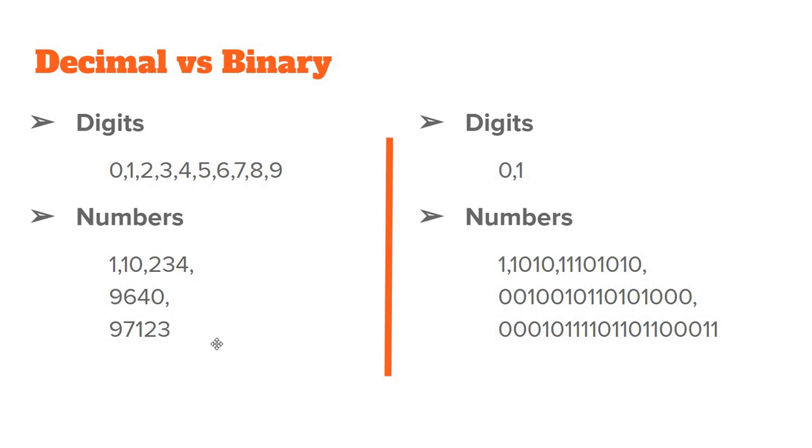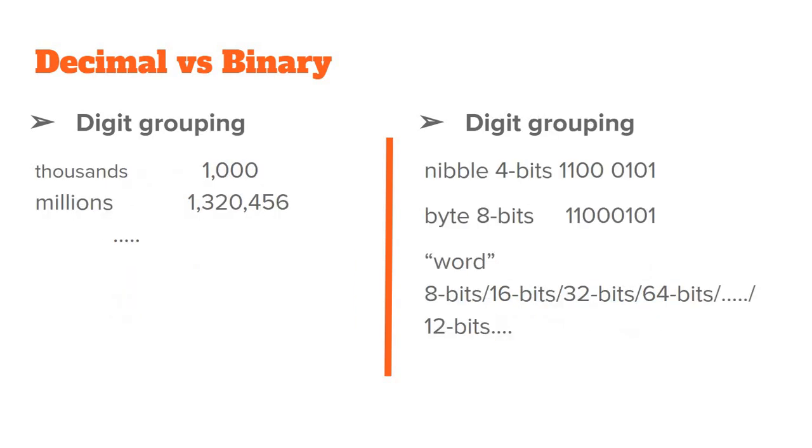You see as the decimal number gets larger, the binary representation gets way larger than that. Now, in decimal we usually use some form of digit grouping. This can be by using a comma or a dot in some other countries. And, for example, you can see here thousands separated, millions, and so on.